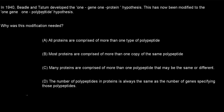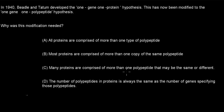Next question. In 1940, Beadle and Tatum developed the one-gene, one-protein hypothesis. This has now been modified to the one-gene, one-polypeptide hypothesis. Why was this modification needed? A. All proteins are composed of more than one type of polypeptide. B. Most proteins are comprised of more than one copy of the same polypeptide. C. Many proteins are comprised of more than one polypeptide that may be the same or different. D. The number of polypeptides in a protein is always the same as the number of genes specifying those polypeptides. Pause the video and attempt the question.